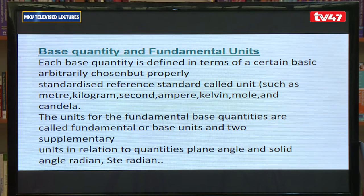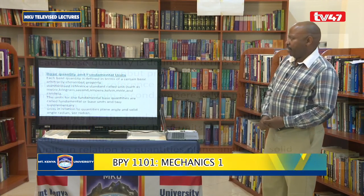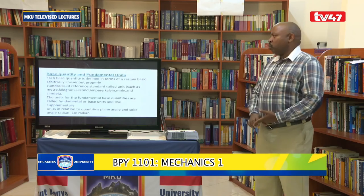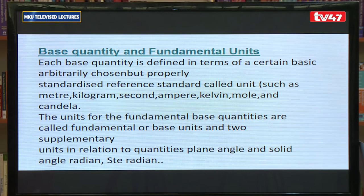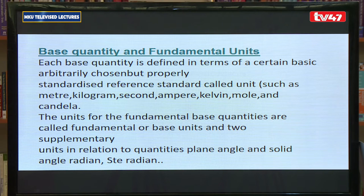Each basic quantity is defined in terms of certain basic, arbitrarily chosen but properly standardized reference units, which include the meter, kilogram, second, ampere, kelvin, mole, and candela. The units for the fundamental base quantities are called fundamental or base units, and there are two supplementary units relating to plane angles and solid angles: radians and steradians.